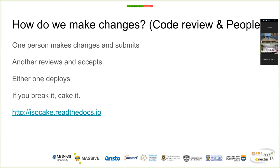A really important component is also how we make changes. We follow a standard software development principle: one person does the work and submits a pull request, and another person reviews it. We're a little free and easy in that anyone can then go ahead and deploy it — we don't have a big CI button for our clusters, because it's really hard to figure out what a unit test is for a compute service. We have one rule: if you make a mistake that users notice, you bring in a cake to apologise.